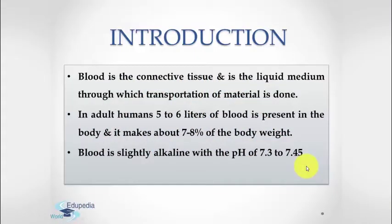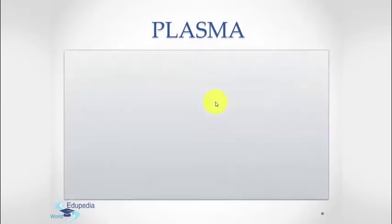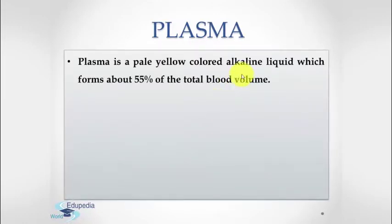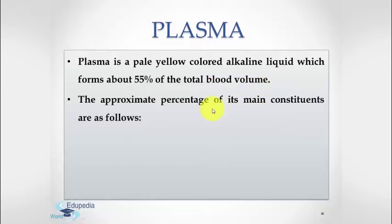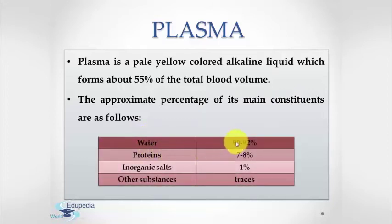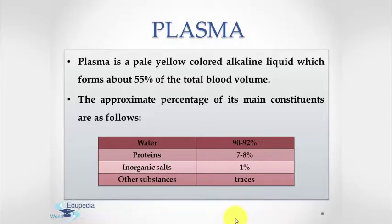It is very important to know what is plasma. Plasma is a pale yellow colored alkaline liquid which forms about 55% of the total blood volume. Plasma also contains several salts, mainly sodium chloride and sodium bicarbonate, glucose, amino acids, fats, enzymes, hormones, antibodies, and also digested and excretory products of food. So many things are present in plasma.